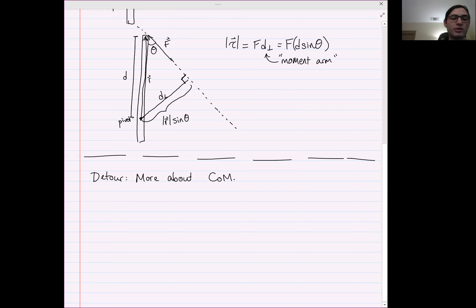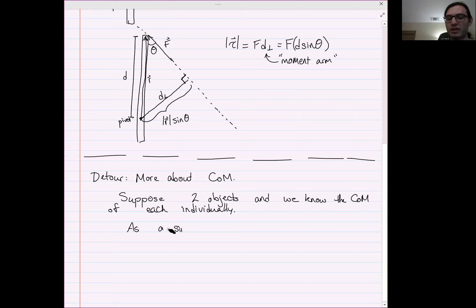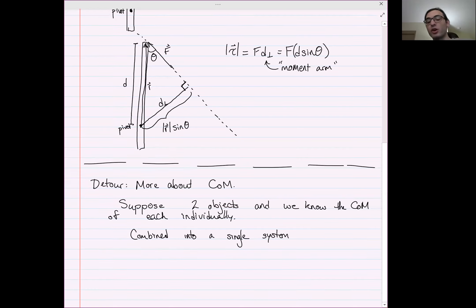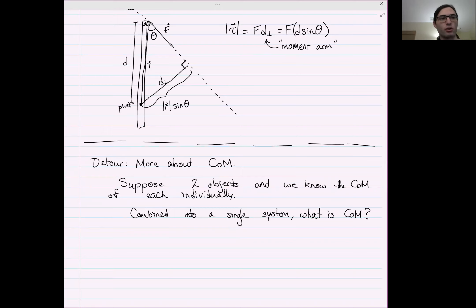Suppose there are two objects and we know the center of mass of each of them individually. The question is, combined into a single system, how would we find the center of mass of that larger system? One way we could do it is just recalculate the center of mass as we know how to do — add up all the little bits for one, add up all the little bits for the other, then divide by the total mass.